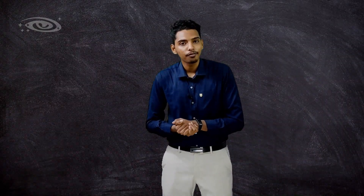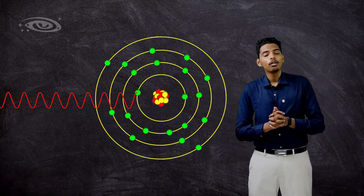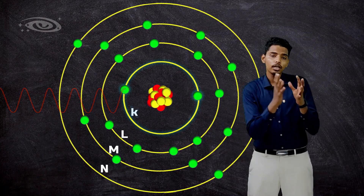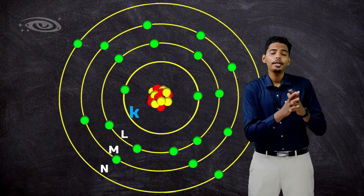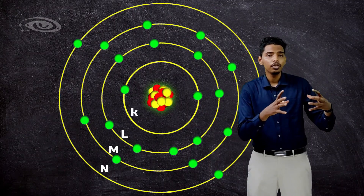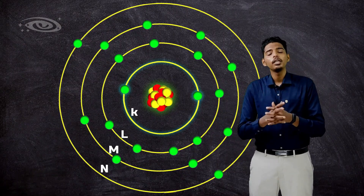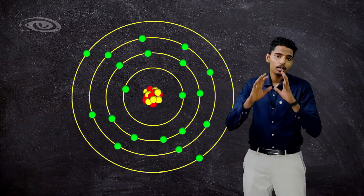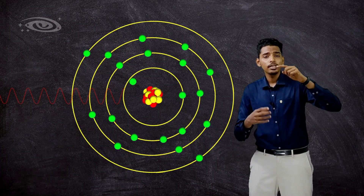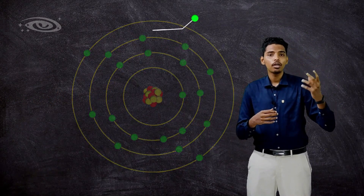Now we'll see about the photoelectric effect or photoelectric absorption. The incident X-ray photon interacts with the innermost shell of the atom — specifically the K-shell electron. The K-shell has more binding energy since it is closest to the nucleus and has strong nuclear attraction. When the incident X-ray interacts with the K-shell electron, it transfers most of its energy to that electron. The K-shell electron gains kinetic energy, gets ionized from the atom, and is called a photoelectron.